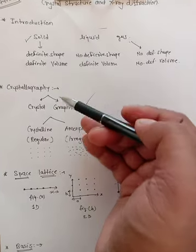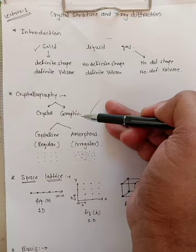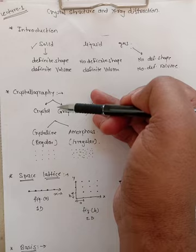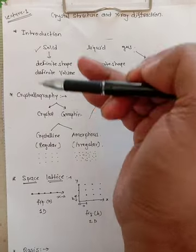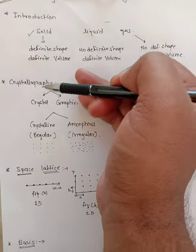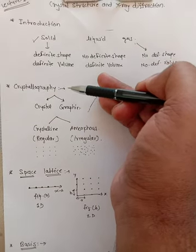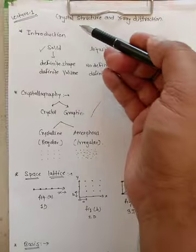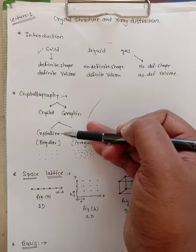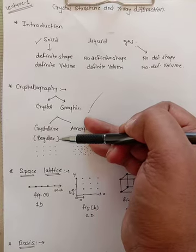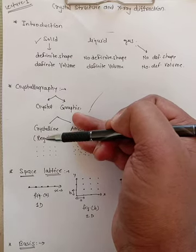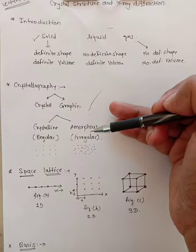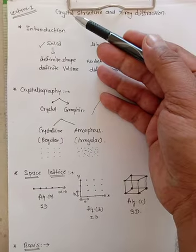Crystallography is the combination of two words: crystal and graphene. Crystal has its usual meaning, like a sugar particle, and graphene means to write. So crystallography means the writing about the crystal. Crystallography is the branch of physics which deals with studying the physical properties of crystalline material or crystalline solid. As far as crystal structure is concerned, solids are divided into two types: crystalline solid and amorphous solid. In crystalline solid, atoms or molecules are arranged in a regular fashion, whereas in amorphous solid they are arranged in an irregular fashion.